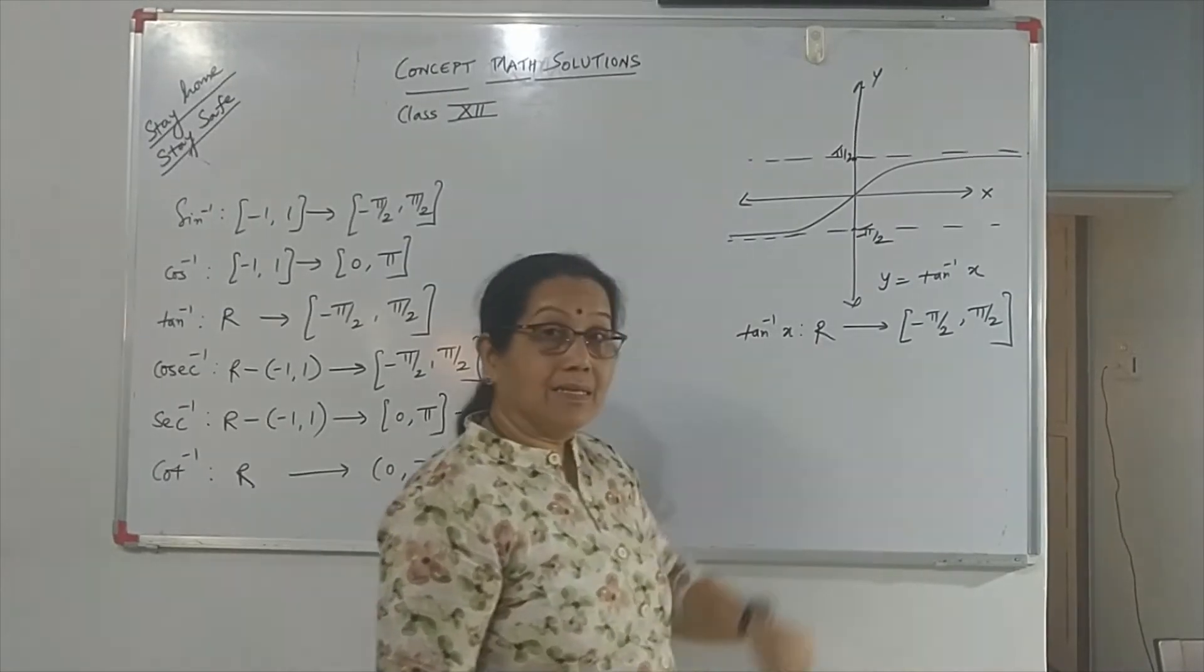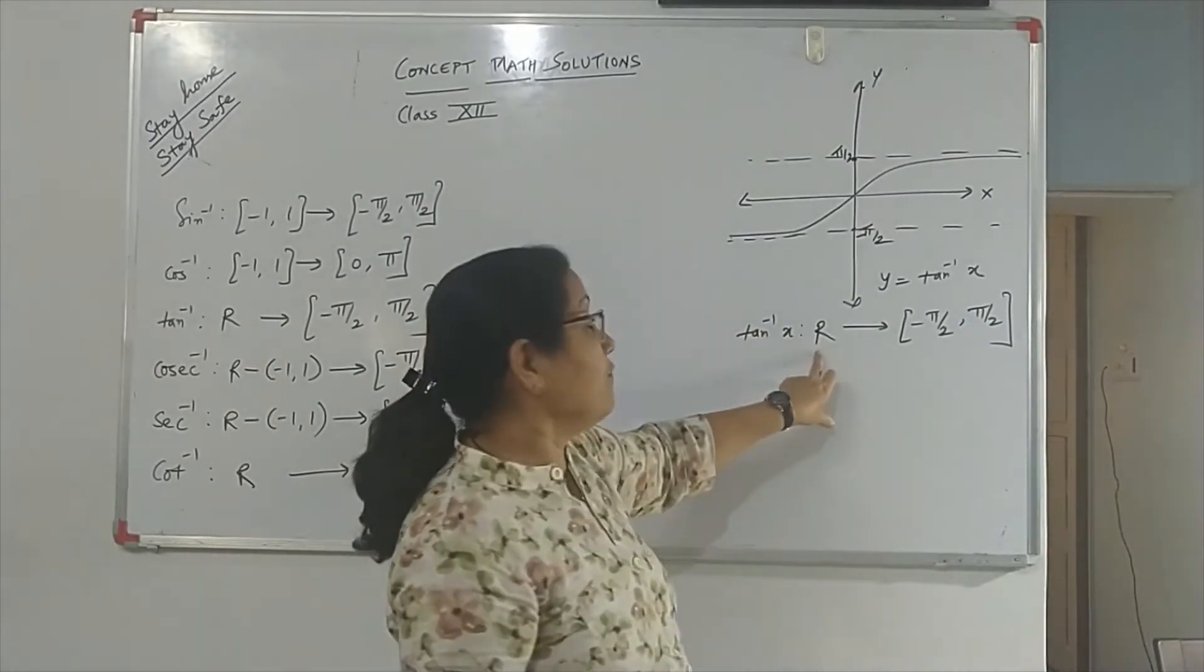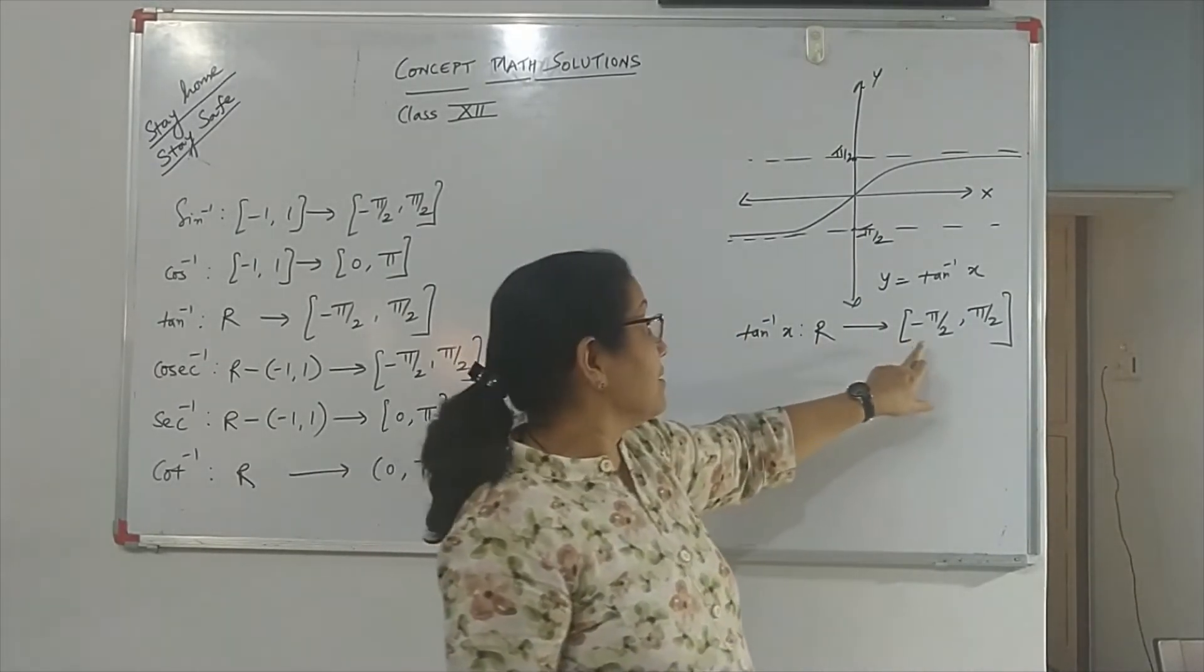You all know minus π by 2 to π by 2. This is R. This is a closed interval. So the domain for tan inverse is R, and this is the range.